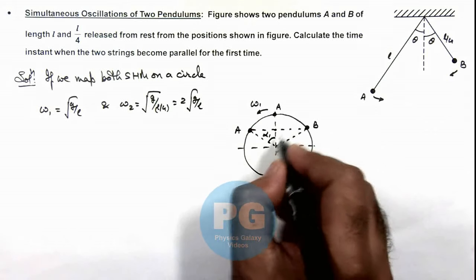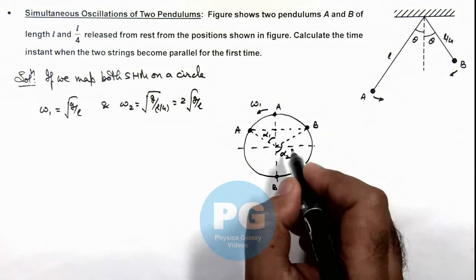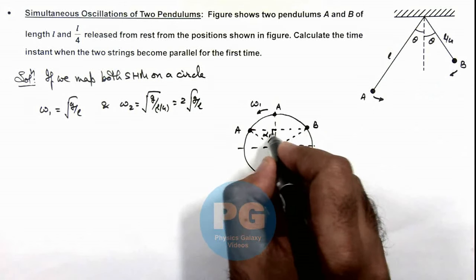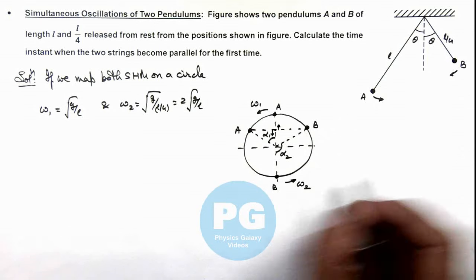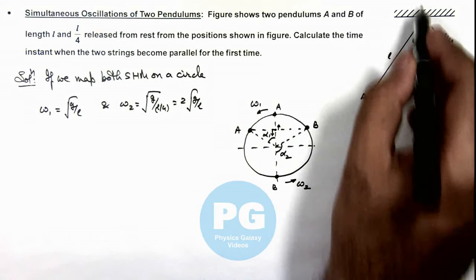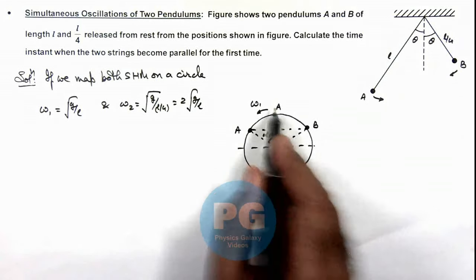So at this point the two strings will be parallel, and at this point A is going in this direction, B is going in this direction. So somewhere on the left side of the mean position they are meeting where A is located.